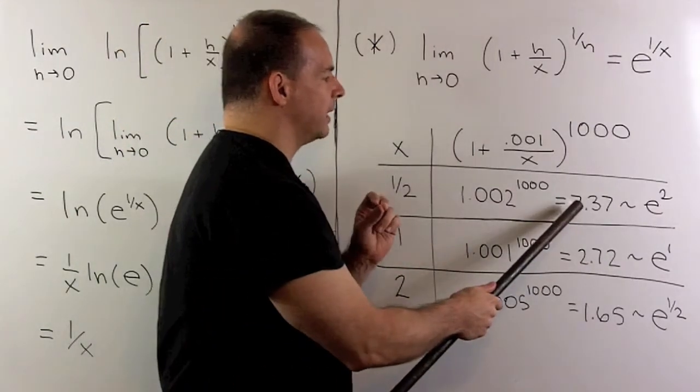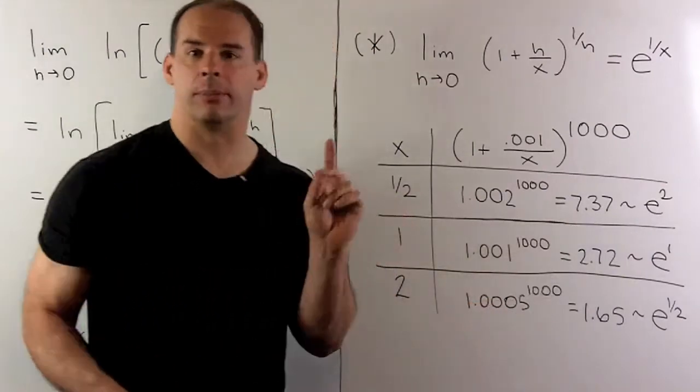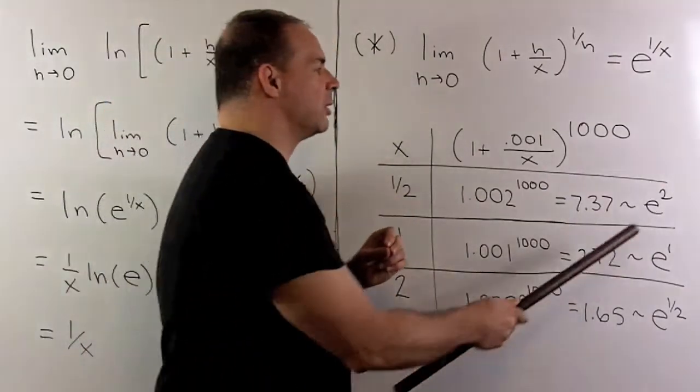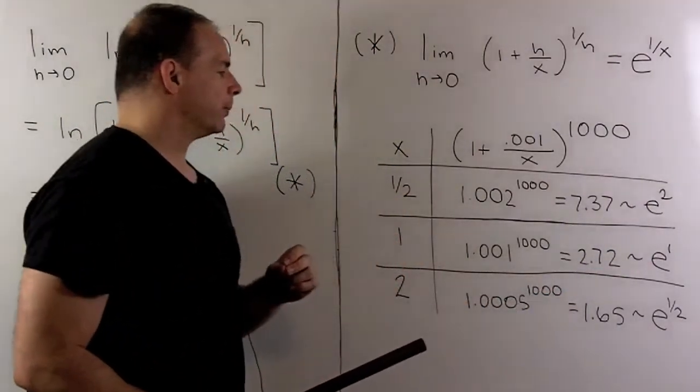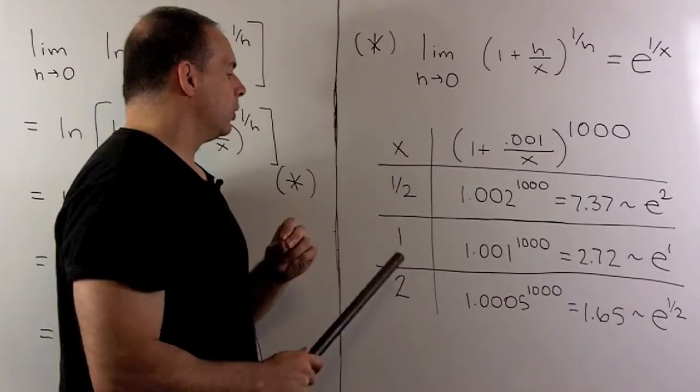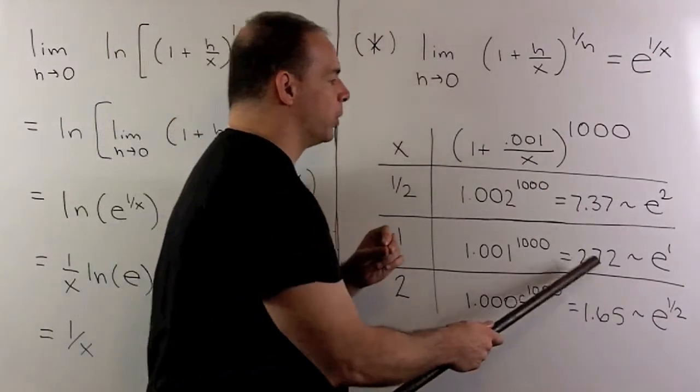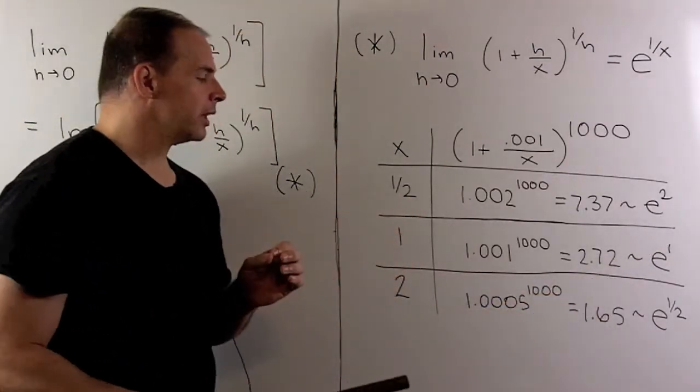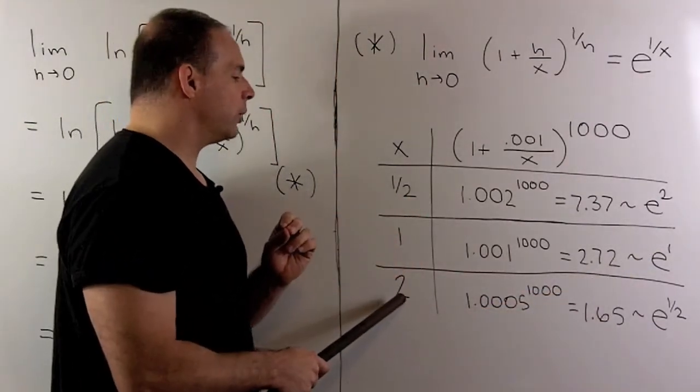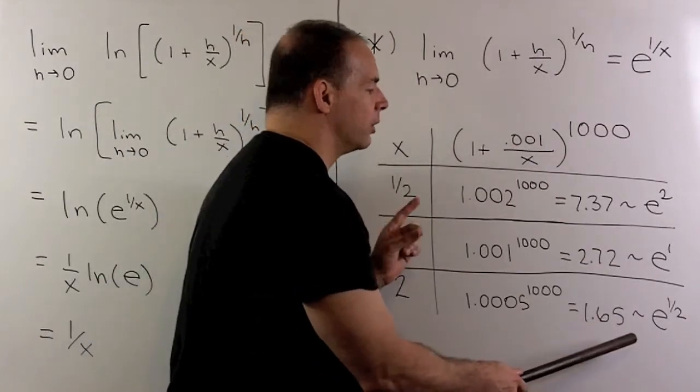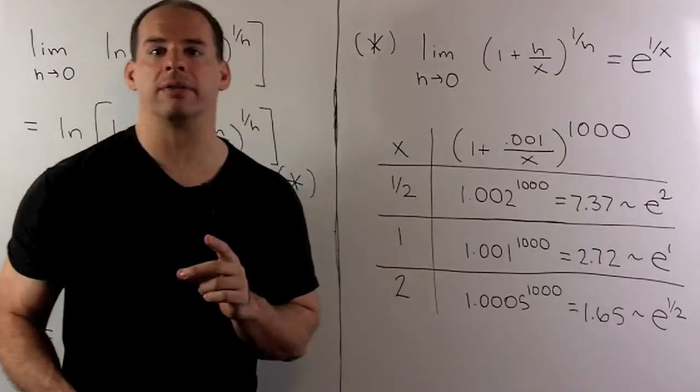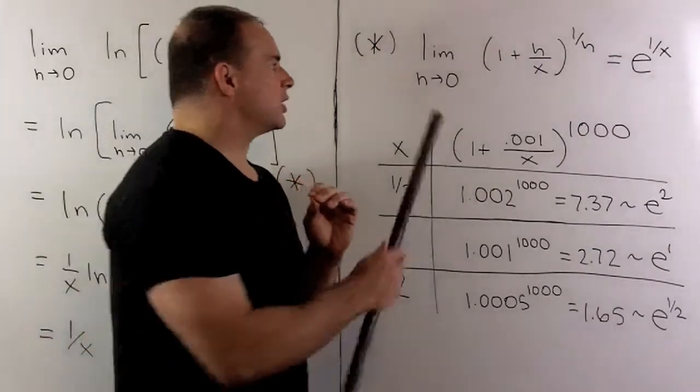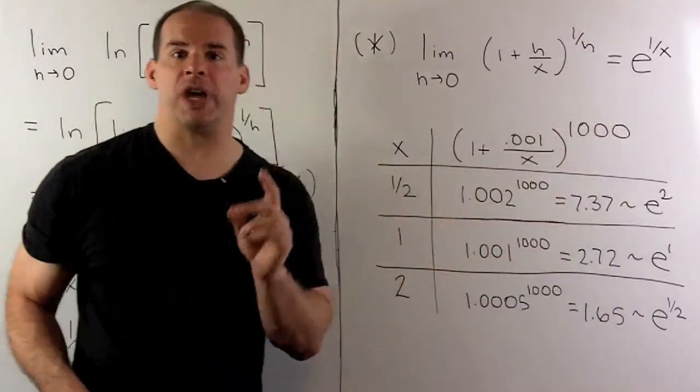Now, when we do that with x equal to a half, out comes roughly 7.37 from my calculator. And that's in the ballpark of e squared. If we do it with a 1, we get 2.72, which is close to e to the 1, or just e. Then if we put in with a 2, we get roughly 1.65, which is close to e to the 1 half. So this is at least believable on the points that we check.